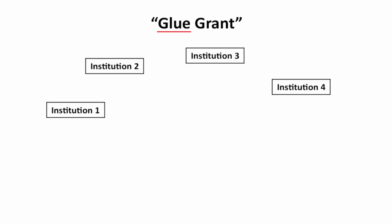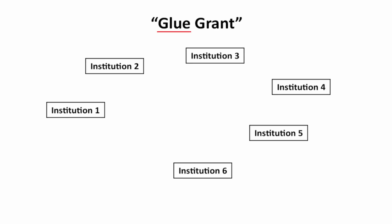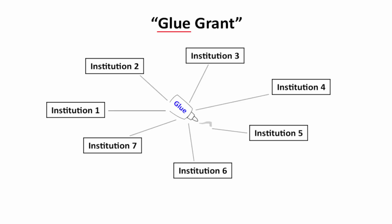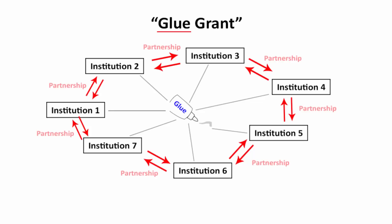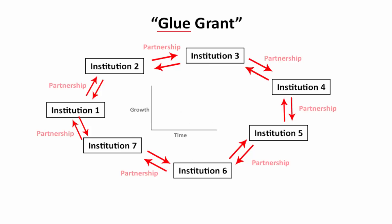There is a term used for this — it is called GLUE grant. By the word GLUE, you can figure out that the plan is to link different components, or multidisciplinary institutions, for a larger purpose and create a sustainable partnership that promotes development — not only for a particular domain but for the entire nation.